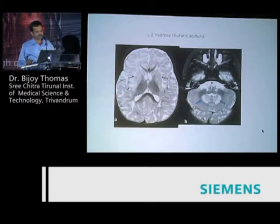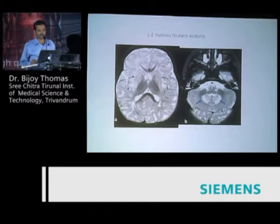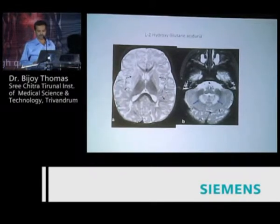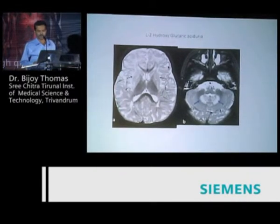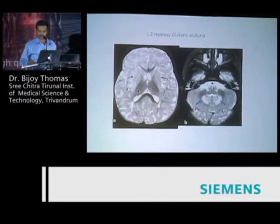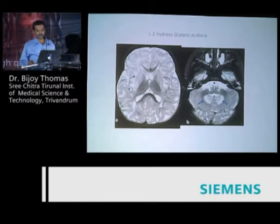There are certain specific imaging features associated with certain conditions, as discussed in our paper. L2-hydroxyglutaric aciduria, which is rare—maybe very rare in this part of the country—shows dentate nucleus hyperdensity, centripetal distribution with subcortical white matter involvement, and external capsule involvement. These patients will present with seizures, and their clinical outcome will be slightly better than D2-hydroxyglutaric aciduria.